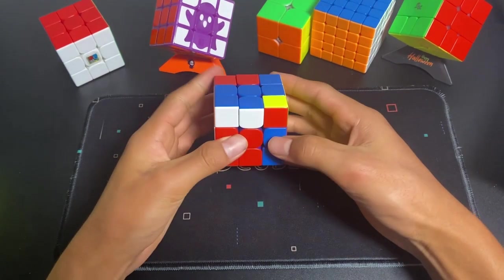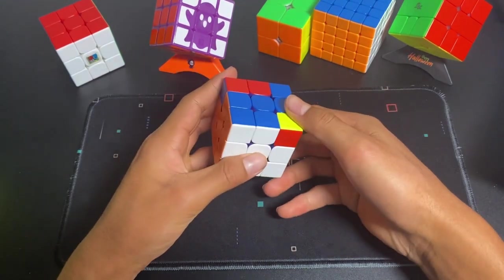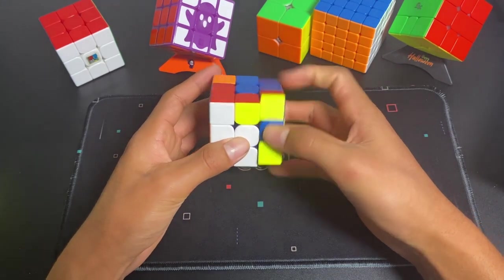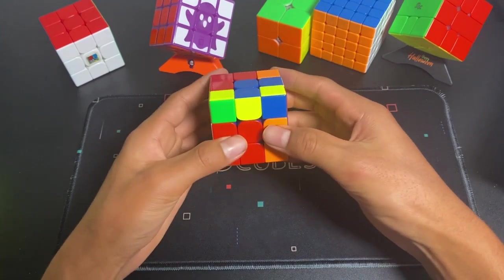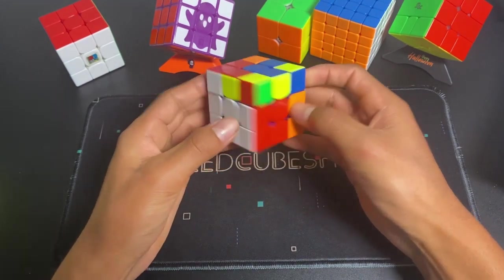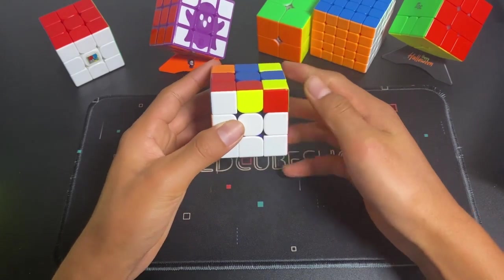The second step is to learn advanced F2L, which is to be able to solve every single one of these, not in the intuitive way, where you would just hide the corner and then solve it.